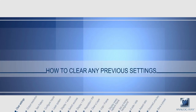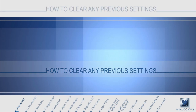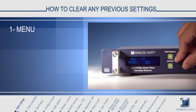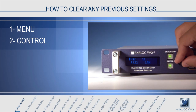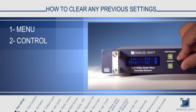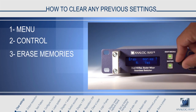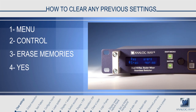How to clear any previous settings. To begin, you may wish to clear any settings entered by a previous operator. Press the menu button to enter the menu, and use the control knob to scroll down to the control menu and select erase memories. Press yes to confirm, and all image memory information will be erased.